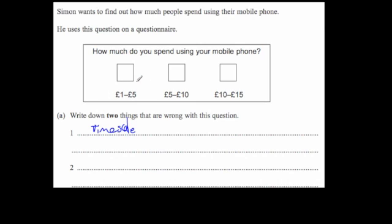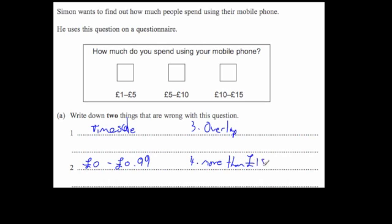The next thing wrong with it is the option boxes don't start at zero, so anything from zero up to 99p is not included. Also, there's an overlap: if you spend five pounds you could tick either the first or second box, and if you spend ten pounds you could tick either the second or third box. And there's no option for more than fifteen pounds — it goes up to fifteen pounds but doesn't cover fifteen pounds and a penny or anything higher. So there are four things wrong: no timescale, nothing below one pound, overlapping boxes, and no option above fifteen pounds.